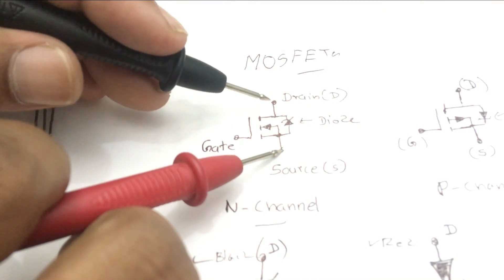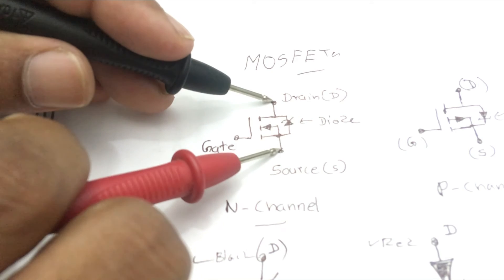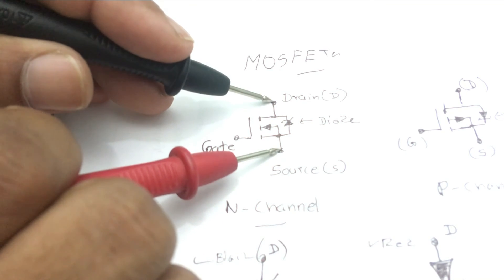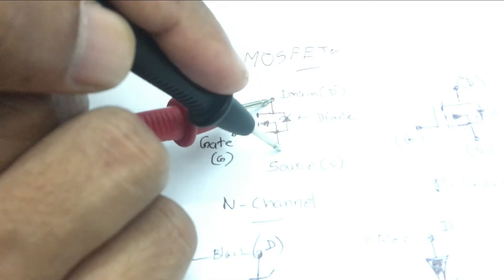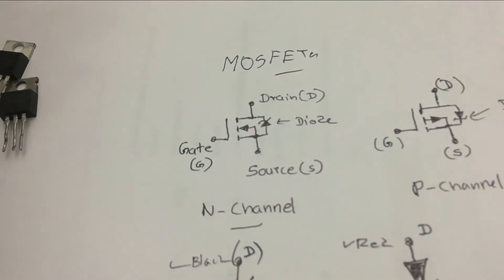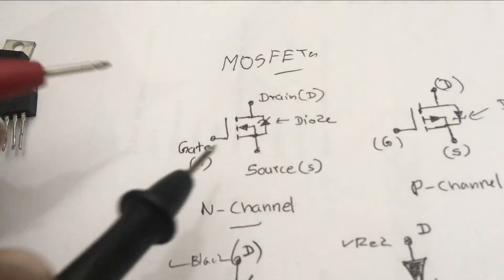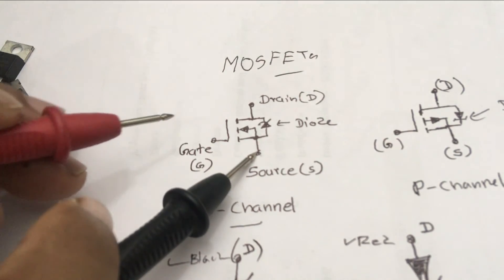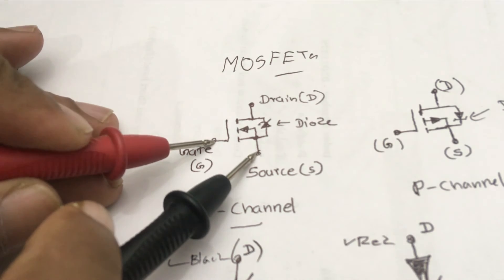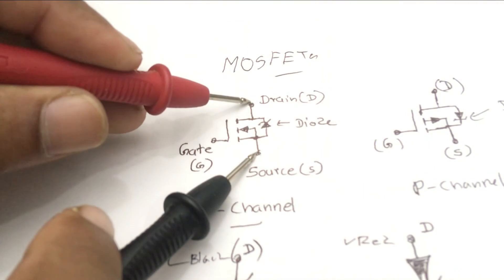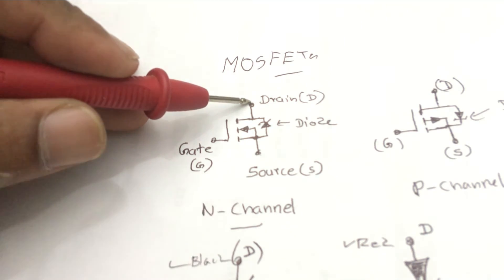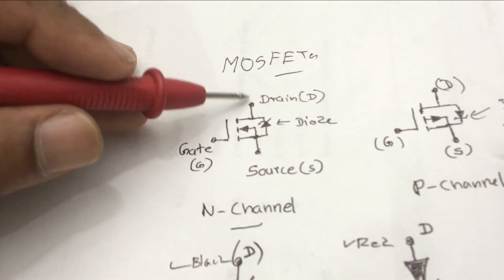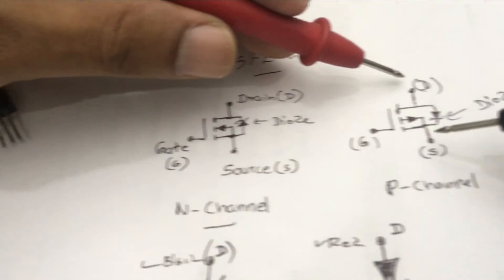To summarize: for an N-channel MOSFET, if you connect the multimeter red probe to source and black probe to drain, there should be a reading. But red probe to drain and black probe to source — no reading. After checking source and drain pins, check the gate as well: keep the black probe on source and connect red to gate, then holding black on source, connect the red with drain. The multimeter should now show a reading for good MOSFETs.